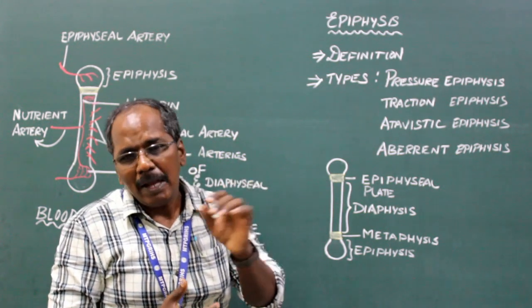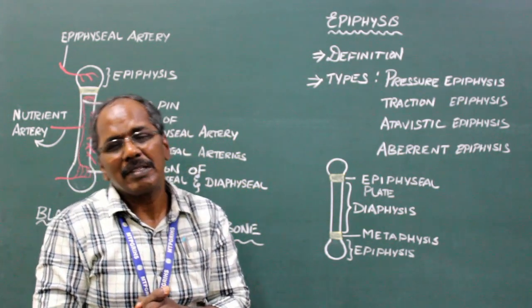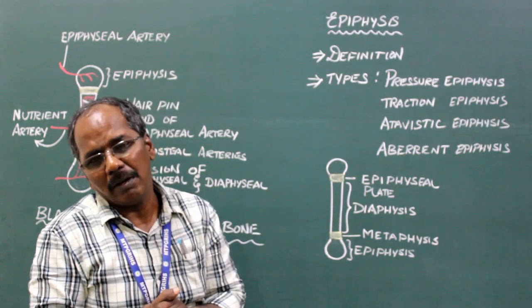Example: Trochanters of Femur and tubercles of Humerus. That is, greater and lesser trochanter of Femur and greater and lesser tubercle of Humerus.